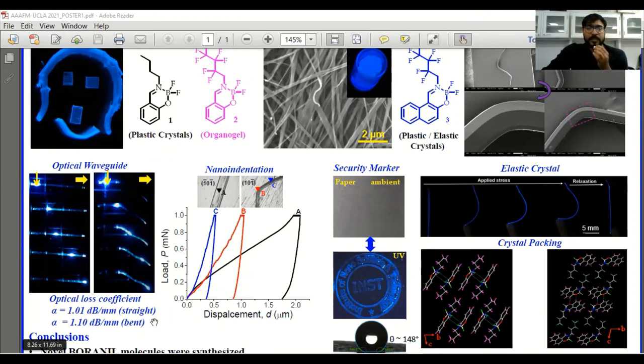So we did nanoindentation studies in different phases of the crystals. Similarly, this gel molecule we used as a security marker because it is not luminescent under UV light and not visible in ambient conditions.